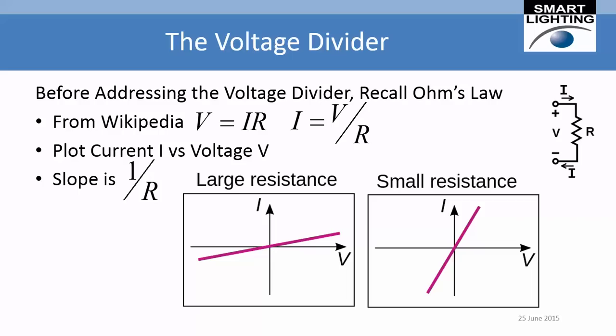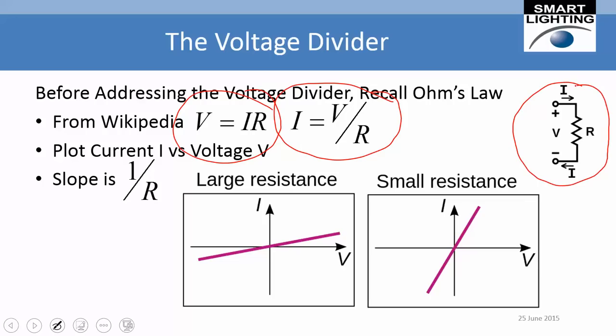So we want to begin by looking at the voltage divider. If you look up the voltage divider, you find that one of the fundamental ideas you really have to start from is Ohm's Law. Looking at Ohm's Law on Wikipedia, it's found in many different forms, but two forms we'll use here are V equals IR and I equals V over R. In other words, if you have a resistor and there's a current I flowing through it, there will be a voltage V across the resistor. On the other hand, if you have a resistor R and a voltage V across it, you'll get a current I given by the voltage divided by the resistance.